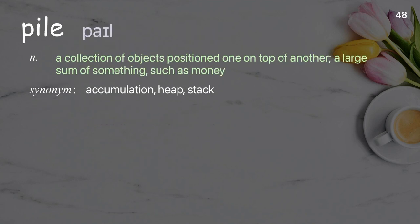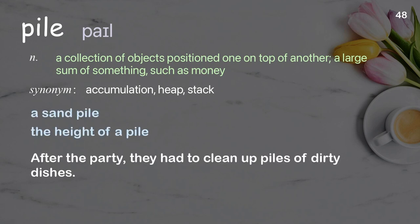Pile: a collection of objects positioned one on top of another; a large sum of something, such as money. Examples: a sand pile, the height of a pile. After the party, they had to clean up piles of dirty dishes.